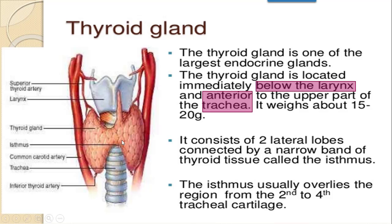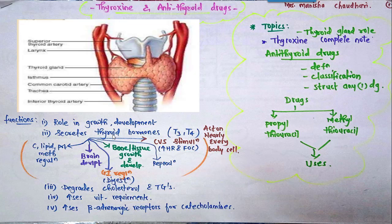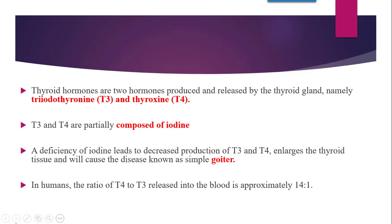Now, the synthesis of thyroid hormones is one of the major functions of the thyroid gland, which acts on each and every body cell. The thyroid gland produces two hormones called T3 and T4, along with another hormone calcitonin. T3 is known as triiodothyronine — tri for 3 — and T4 is known as thyroxine or tetraiodothyronine.